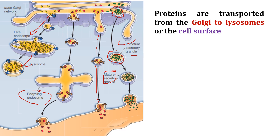The granule matures, sorting its contents until specific signals promote fusion with the plasma membrane. For instance, pancreatic digestive enzymes are stored in immature secretory granules, which mature into secretory granules. The enzymes are stored until food in the stomach and small intestine triggers secretion. Other proteins are specifically targeted to intracellular destinations such as lysosomes in animal cells or vacuoles in plant cells.